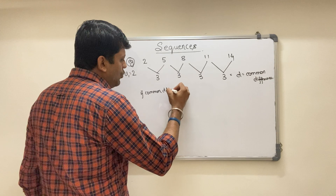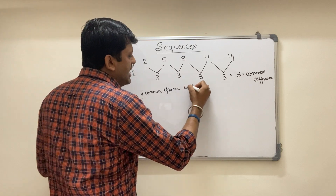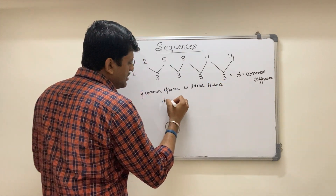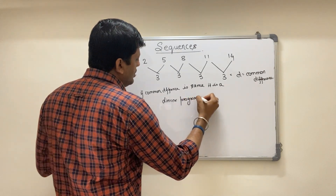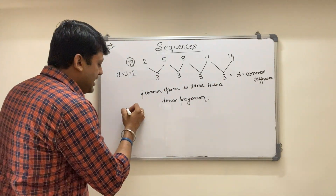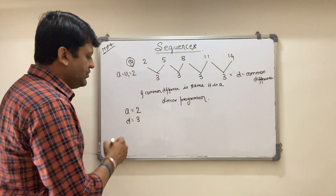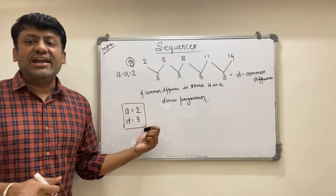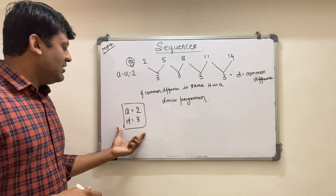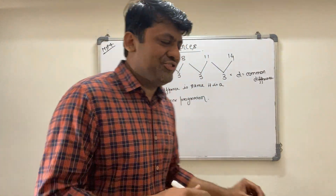If the common difference is the same throughout, it means this is a linear progression. The two main things we extract from any linear progression are the first term — here it is 2 — and the common difference, which is 3. If you can find these two values in any linear progression, 50% of your questions are already solved. Sometimes the question is framed in a way that traps you, and I'm going to show you those questions.